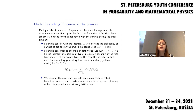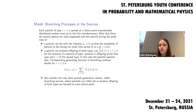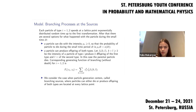We also assume that a particle can produce offspring of both types. Let beta_{i}(k, l), where k+l ≥ 2, be the intensity of a particle of type i producing k offspring of the first type and l of the second type. We assume that particles cannot change their types, so the intensities beta_1(0,1) and beta_2(1,0) equal zero.